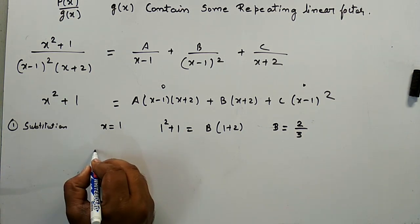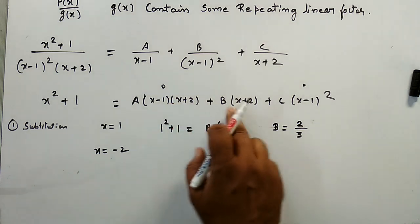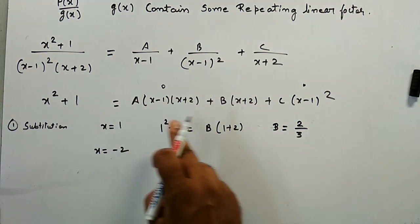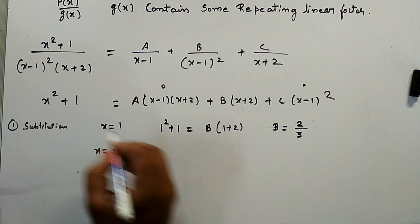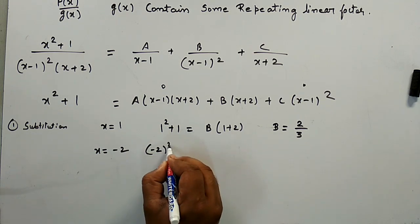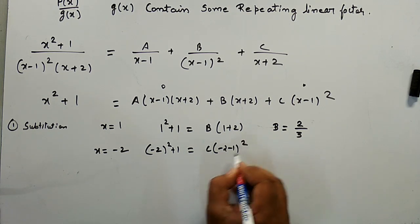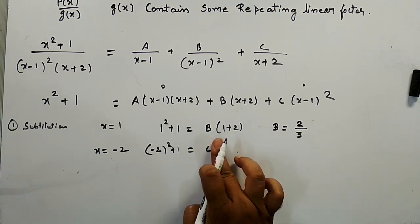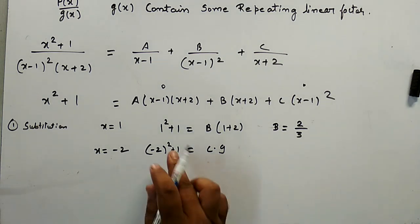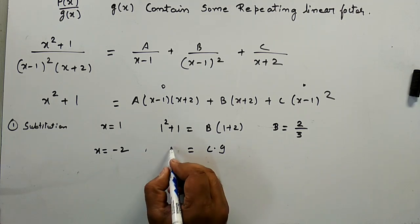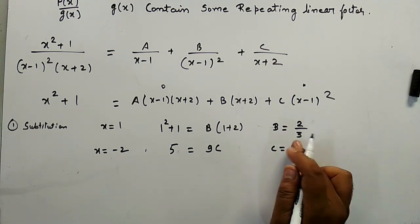Now substituting x = -2, the first and second terms get eliminated. Putting x = -2: (-2)² + 1 = C·(-2 - 1)² = C·(-3)² = 9C. Since (-2)² + 1 = 5, we get 9C = 5, so C = 5/9.